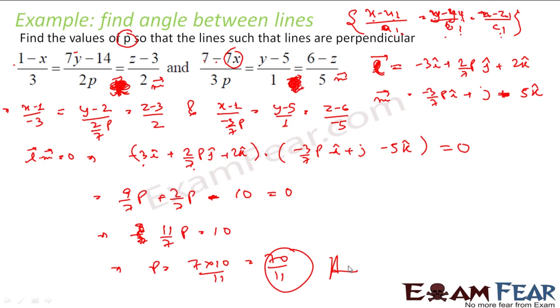So this question was simple. The tricky part was the equations of line were not in the standard format. So the first thing I did was I converted this equation into standard format. Once my equations are in standard format, I can very easily find the l vector and m vector that are the line vectors which are parallel to this line and this line.